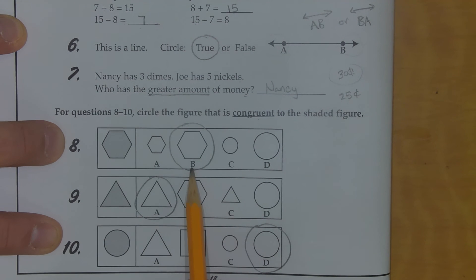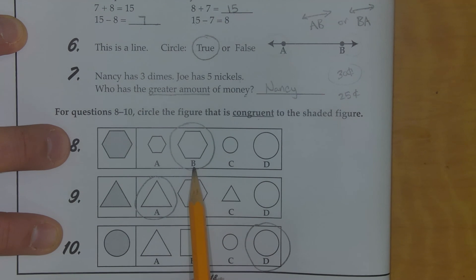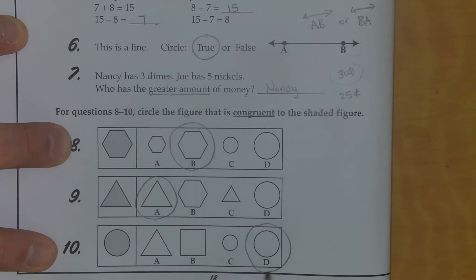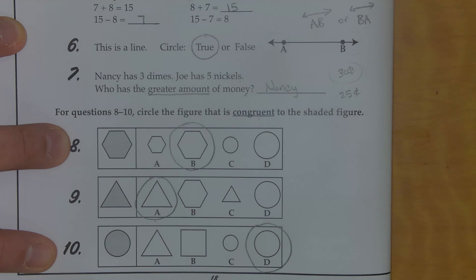Number 8: you should have circled the letter B with the shape. Number 9: you should have circled the letter A with the shape. And number 10: you should have circled the letter B with the shape.